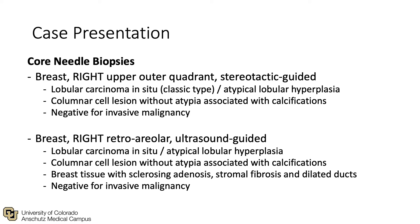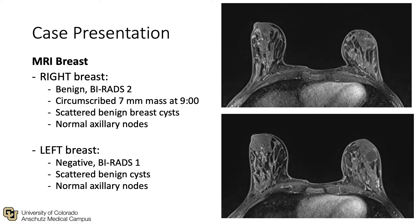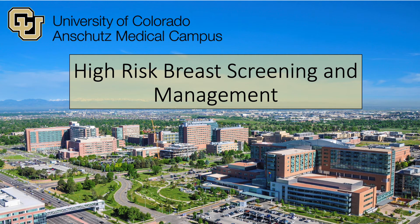On core needle biopsy of the right breast, she was found to have lobular carcinoma in situ and atypical lobular hyperplasia in two sites. On MRI of the breast, she was found to have a circumscribed 7mm mass in the right breast, along with scattered benign cysts bilaterally.